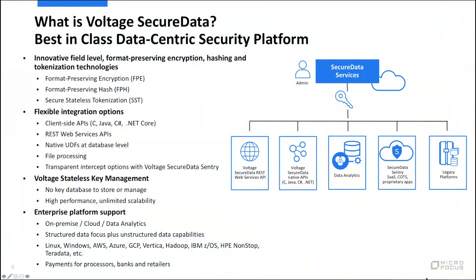So what is Voltage Secure Data? At a very high level, we're providing a platform for data protection that offers field-level format-preserving protection capabilities. It takes various forms: one being format-preserving encryption, where Voltage is a leader in that technology worldwide; there is hashing or one-way protection mechanisms; and there is a true tokenization capability for the PCI industry. This form of encryption is not the type most people are familiar with — it is a mode of encryption, standard-based, still based on AES, still using 256-bit keys.